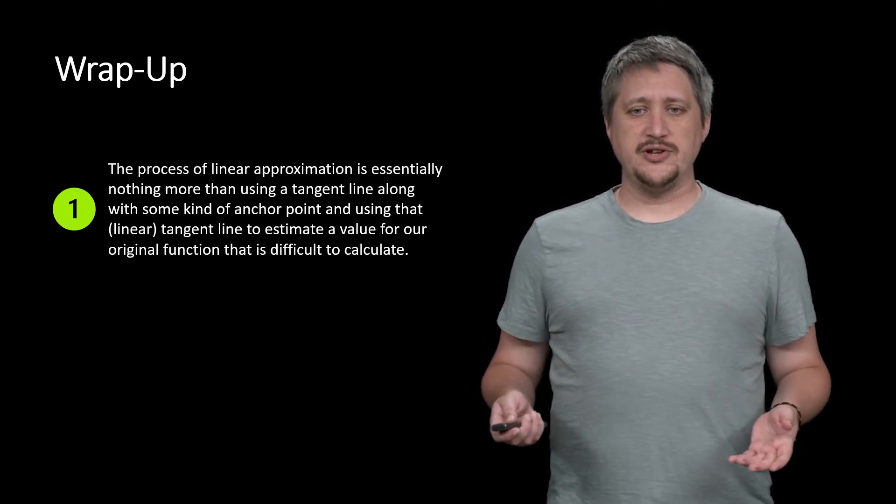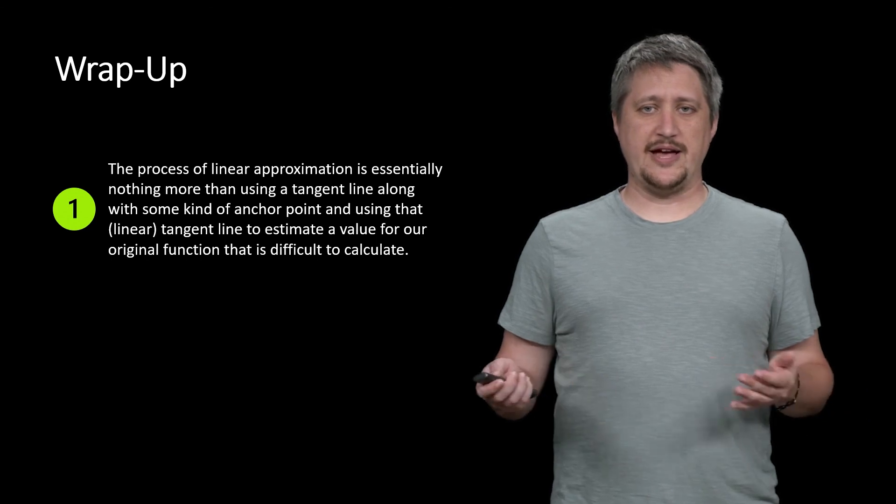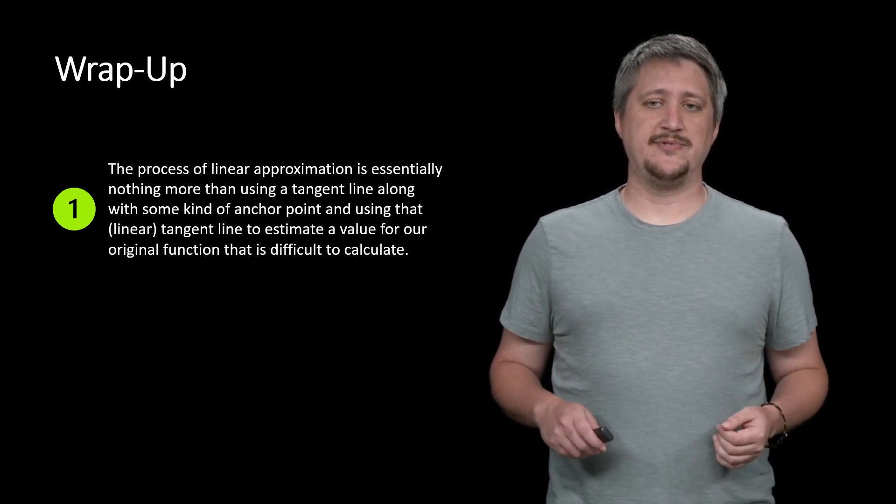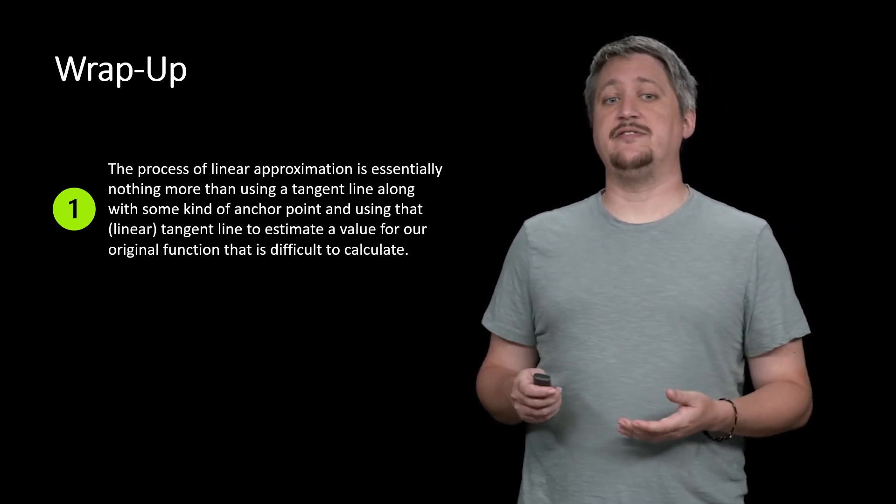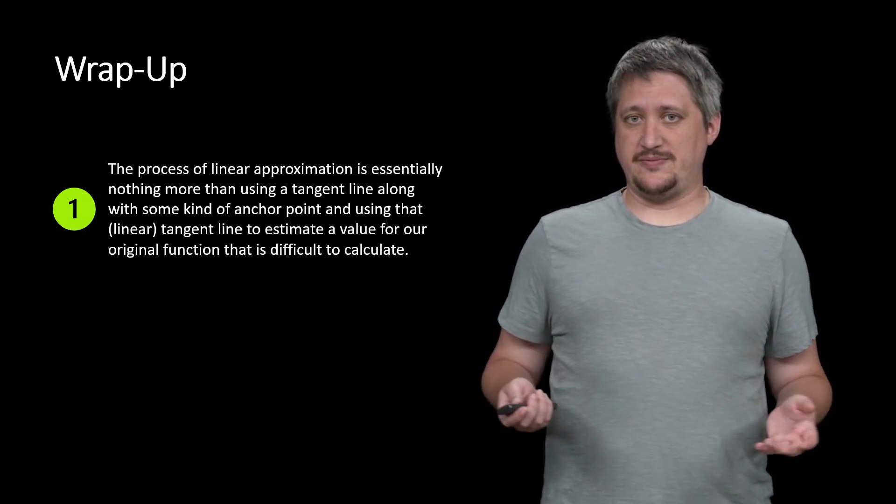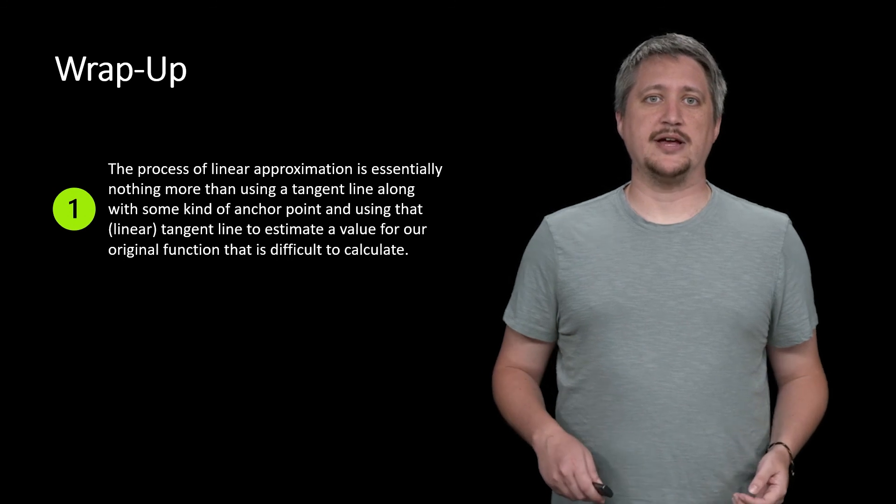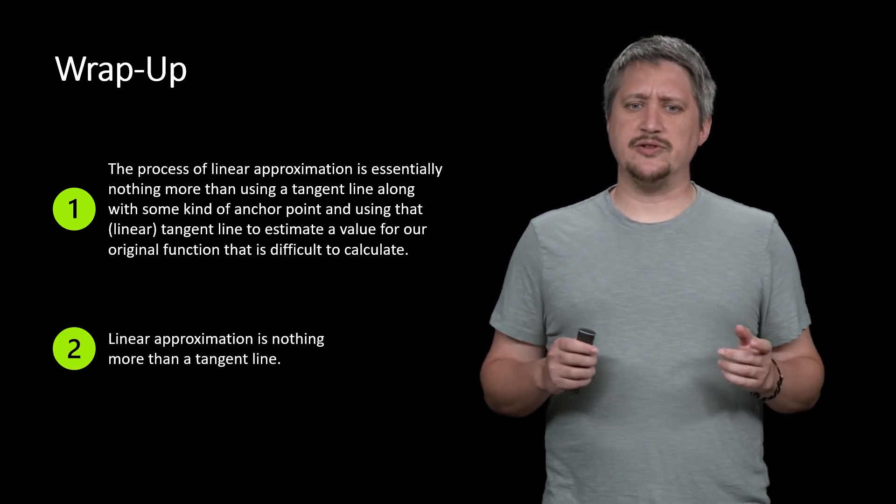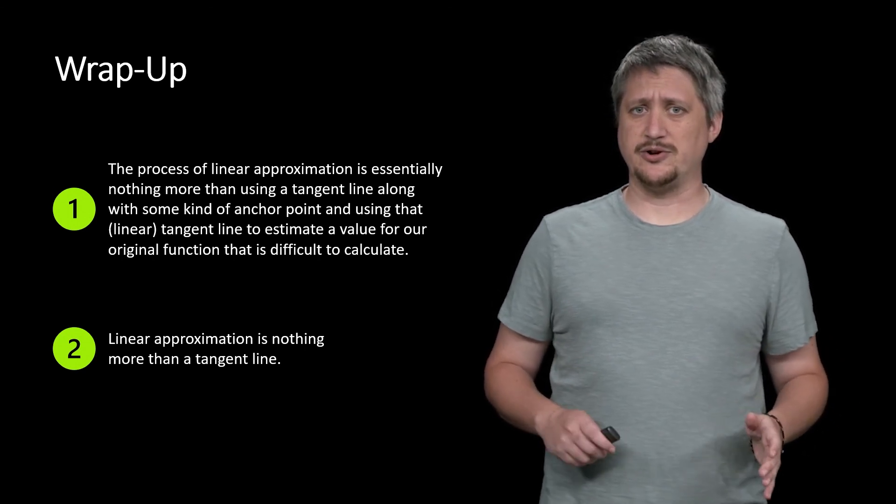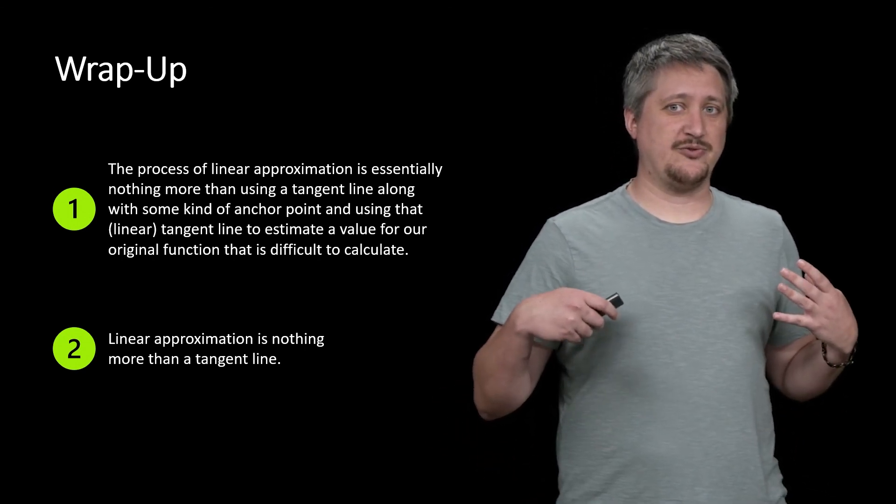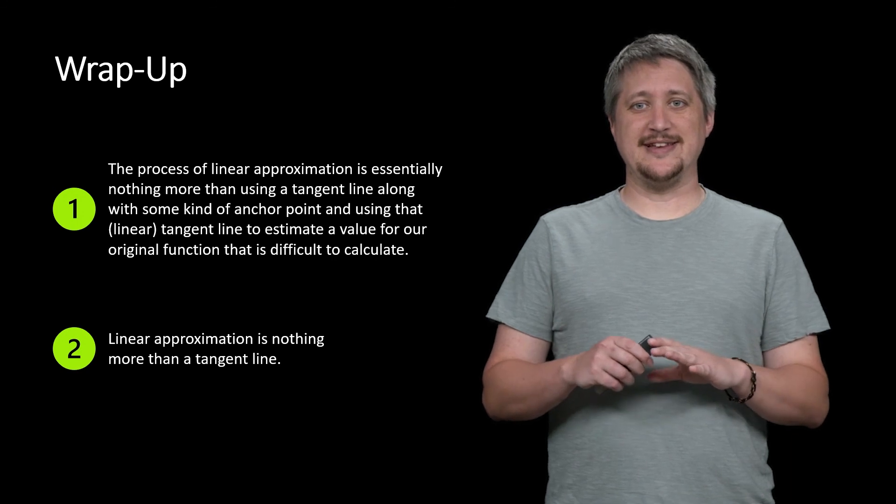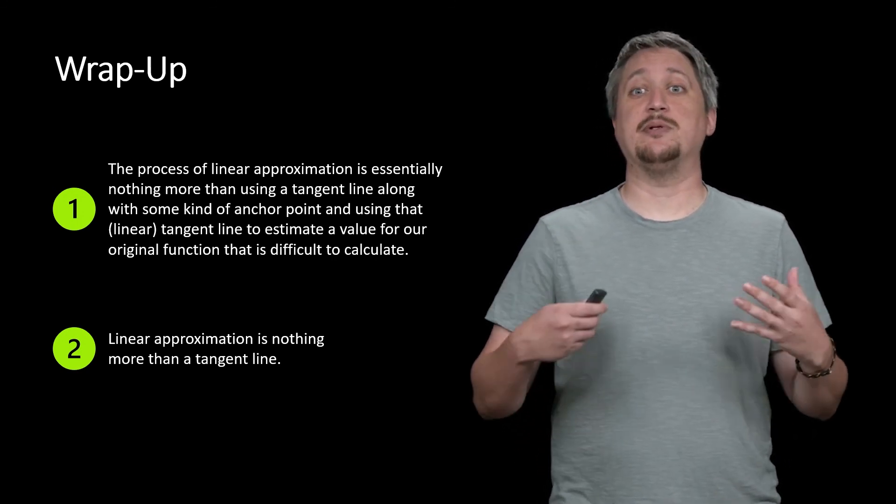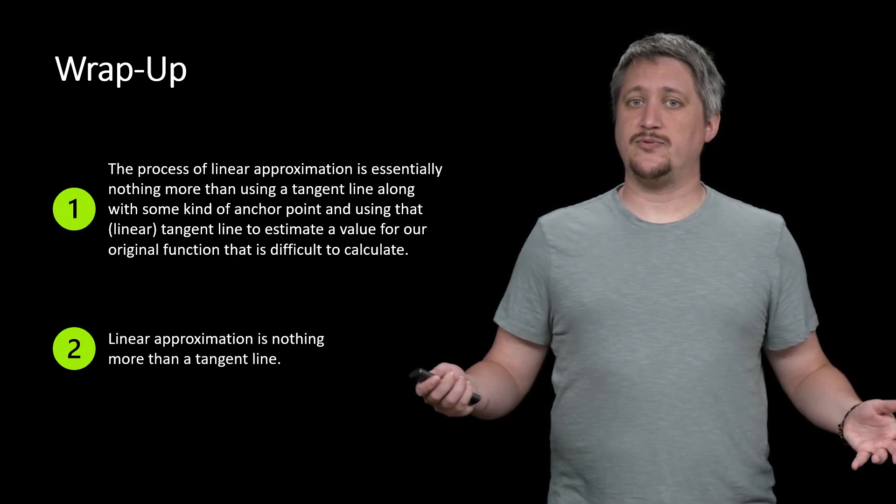Okay, so what do we do? The process of linear approximation is essentially nothing more than a tangent line, along with some sort of anchor point that we can calculate nicely. So this idea is that we want to use this linear tangent line to estimate the value for our original function that is maybe otherwise difficult to calculate. But the real takeaway here is that the linear approximation is really nothing more than a tangent line. We've already done stuff with tangent lines, and this is just an application of that thing. This isn't a new idea so much as it is a new way of applying that idea.